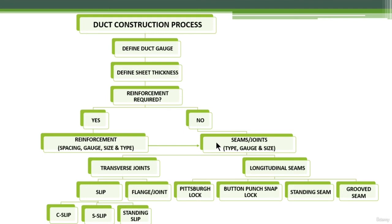When specifying seams and joints, you define their type, gauge, and size. If reinforcement is required, you refer to a table that provides reinforcement details including spacing, gauge, type, and size. Afterwards, you go back to specify the seams and joints of the duct — their type, gauge, and size.